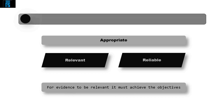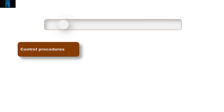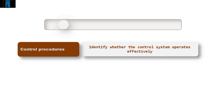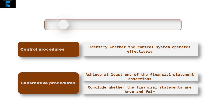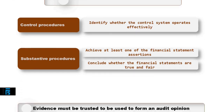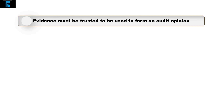The term 'appropriate' can be explained by splitting it into two areas: relevant and reliable. For evidence to be relevant, it must achieve the objectives — evidence from control procedures should identify whether the control system operates effectively; evidence from substantive procedures must achieve at least one financial statement assertion. These assertions help ensure the auditor can conclude whether the financial statements are true and fair.